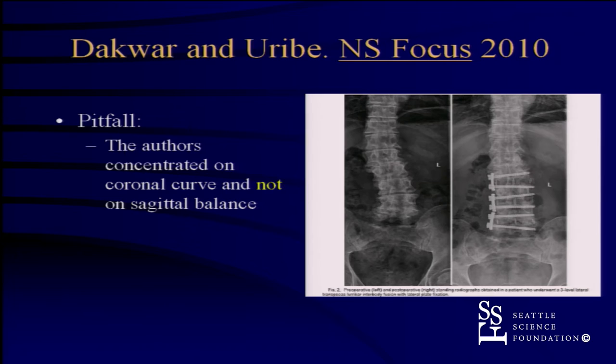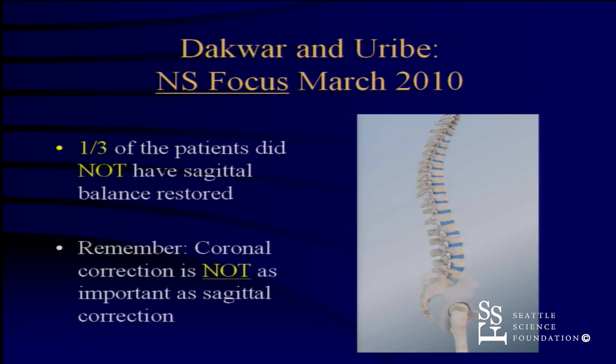Juan told me later that this patient had pseudoarthrosis and some screws broke. One-third of the patients in that article did not have their sagittal balance restored. It's not the coronal correction that's important — it's the sagittal correction. This is something we all learn from. When you start doing something new and don't realize all the things involved, we have to evolve and learn and figure out what we have to do to be better.